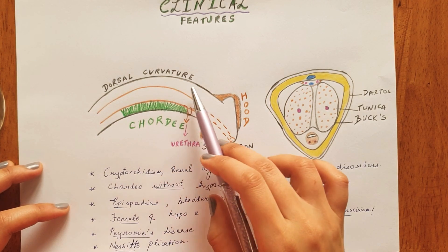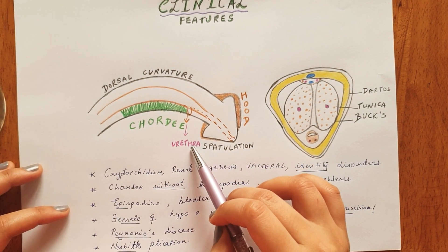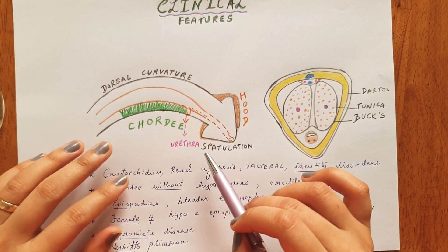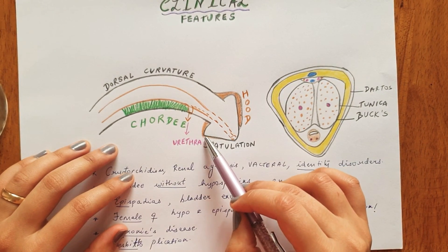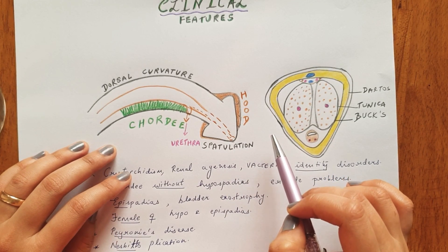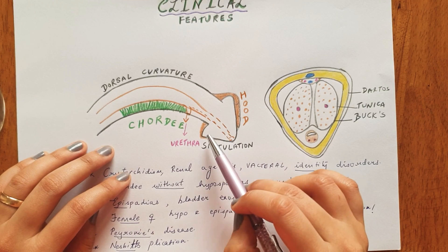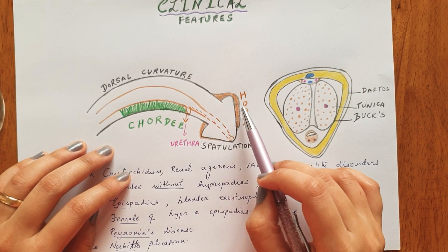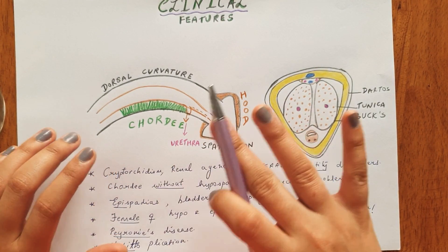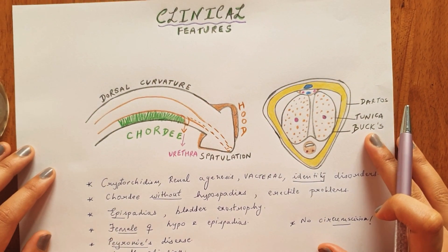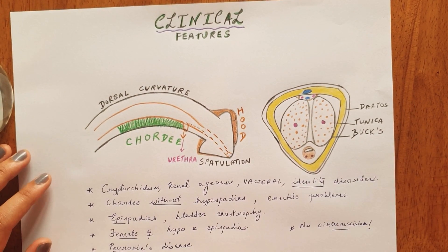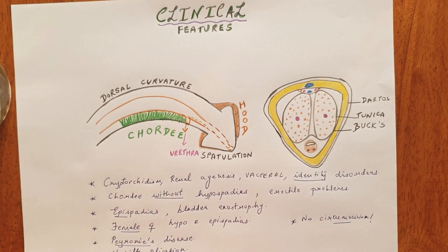The dorsal curvature of the penis is associated with chordee and the abnormal urethral opening. The other characteristic features of hypospadias include spatulation — normally the glandular region is conical in shape, but in hypospadias there is a spatulated opening. Furthermore, the prepucial skin is deficient on the ventral surface and collects on the dorsal surface, which is known as hooding of the prepuce. This covers all the clinical features important for hypospadias, and in the upcoming video I will discuss the principles of surgical correction.